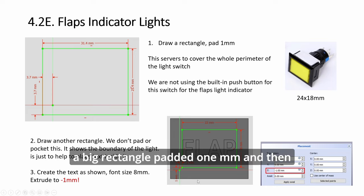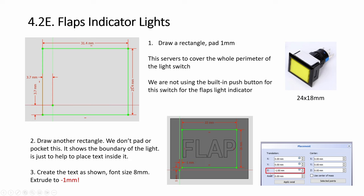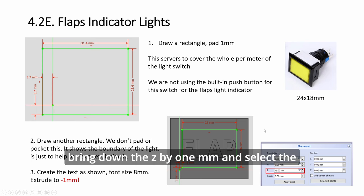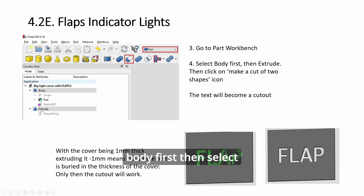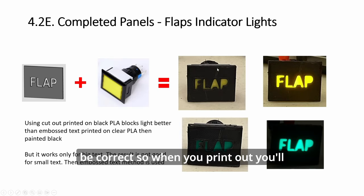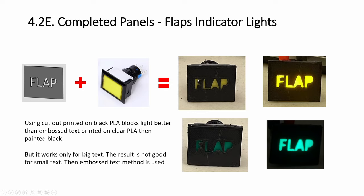For the flaps we use even bigger rectangle light indicators, one yellow one green. This is very easy - just a big rectangle padded 1mm, then have some text and cut out as usual. Bring down the Z by 1mm, select the body first, then select extrude. In part workbench click on this and you will cut out the text. Always select the body first and then the next thing you select, when you click this it will remove from the body. Don't click on this one first and then the body - the order has to be correct.